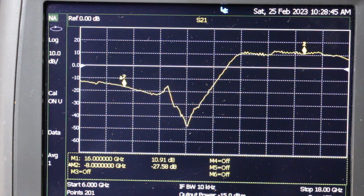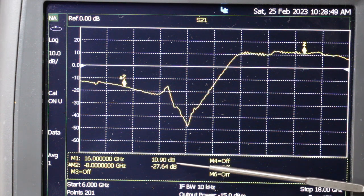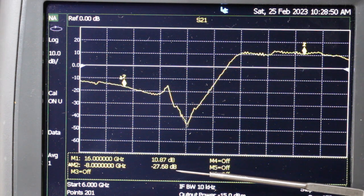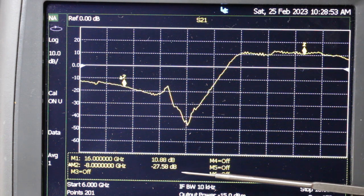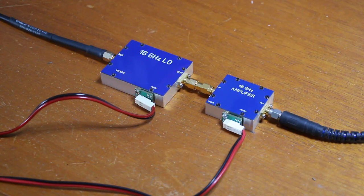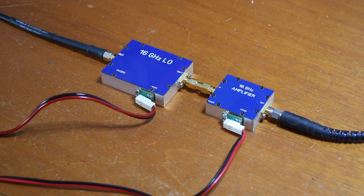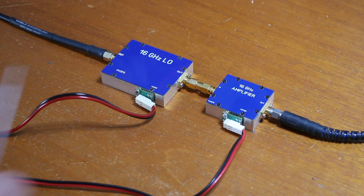And this other marker here is the 8 gigahertz harmonic. You can see it's attenuated about 27 to 28 dB.